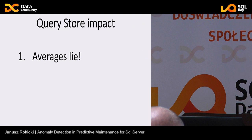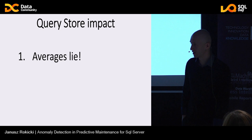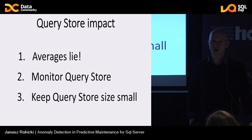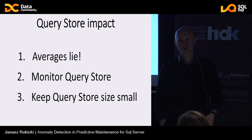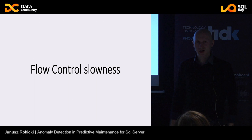Key takeaway from the query store example: whoever tells you the average performance impact is X, you have to verify it — there can be cases where it's 10x over a very short period and negligible the rest of the time. You must monitor query store and keep its size as small as possible, which is counterintuitive because you want to capture as many execution statistics as possible, but it actually affects your database performance.